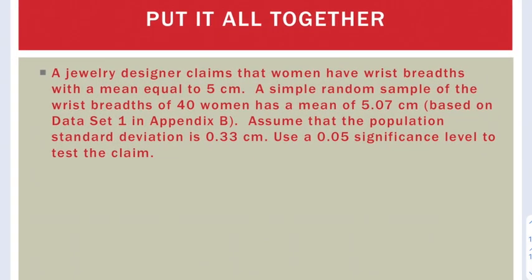Let's move on to one more problem where we do it all. A designer claims that women have wrist breadths with a mean of 5. We collect some data, and we have 40 women, so n equals 40. And that sample has a mean of 5.07. That's a sample mean, so x-bar equals 5.07. We're being told that the population standard deviation is 0.33, so sigma equals 0.33. And they tell us to use the 0.05 significance level to test the claim.